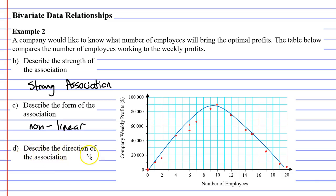Question D: describe the direction of the association. Is it positive or negative? It's actually both. It starts off positive and eventually becomes negative. So we're just going to write that it's not applicable because when describing the direction you have to pick either positive or negative, and we can't do that in this particular situation.